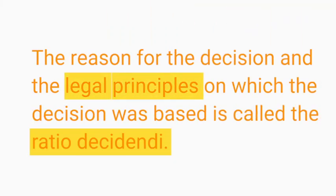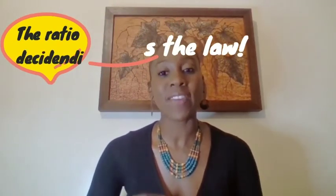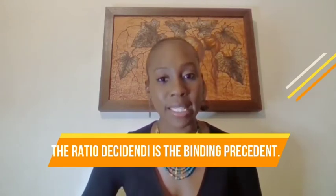This is the part that we call the ratio decidendi. The judge will then apply the law — the ratio decidendi — to the facts of their case, where those facts are determined to be sufficiently similar to the facts in the decided case, which will also be found in the judgment they are reading or referring to.